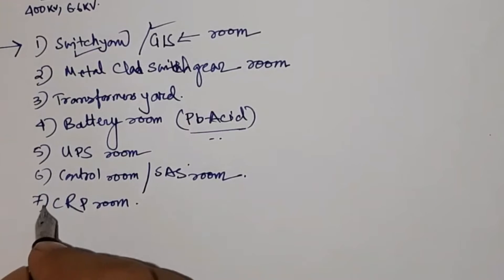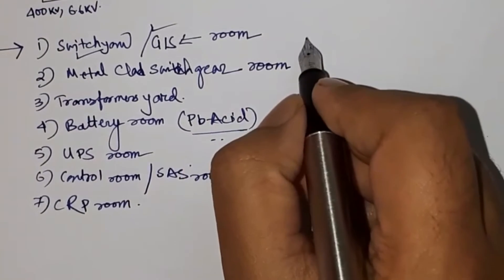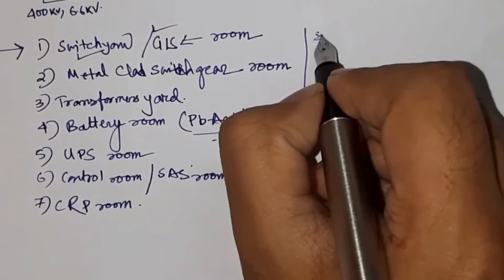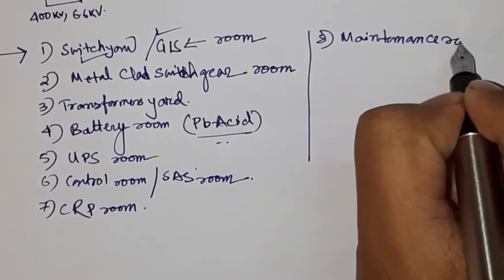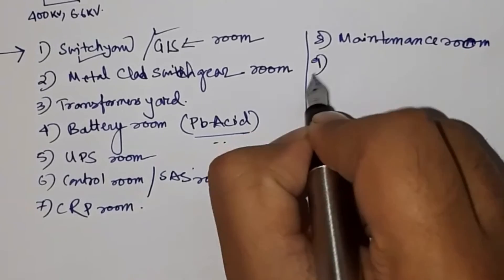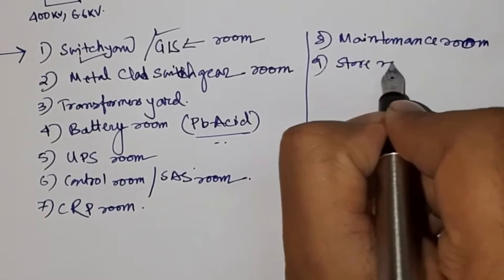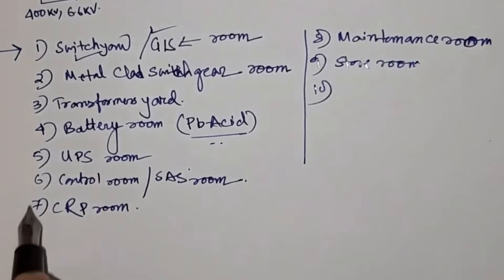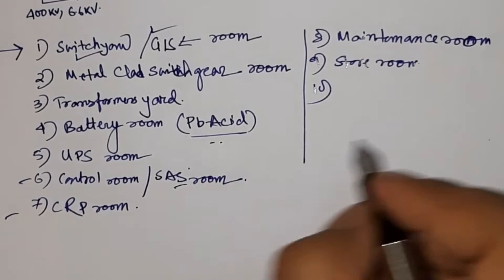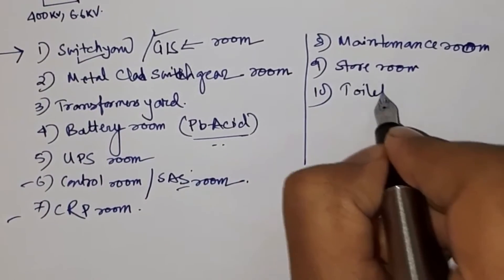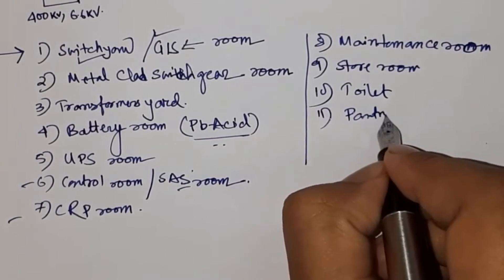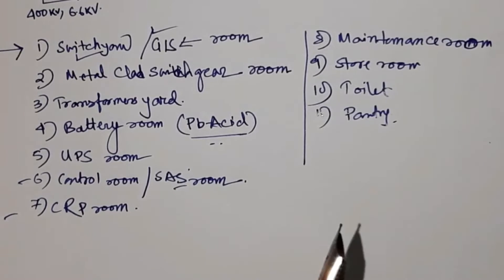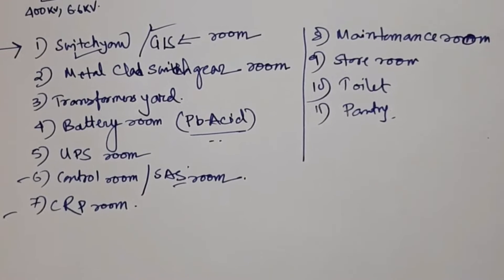There are also additional rooms like a maintenance room, a store room, and since the control room, CRP room, and SAS room are manned rooms, you will also need a toilet and a pantry for tea and snack service. So these are all the facilities that are present inside a substation.